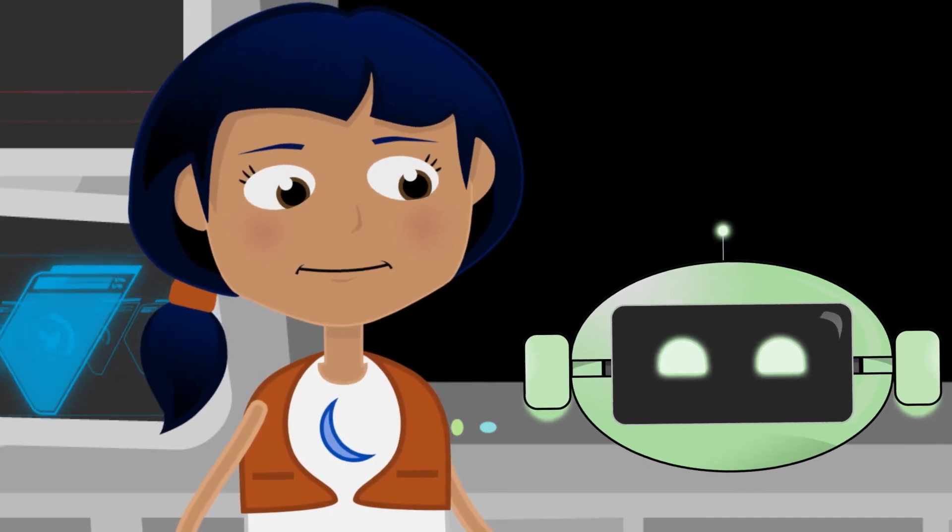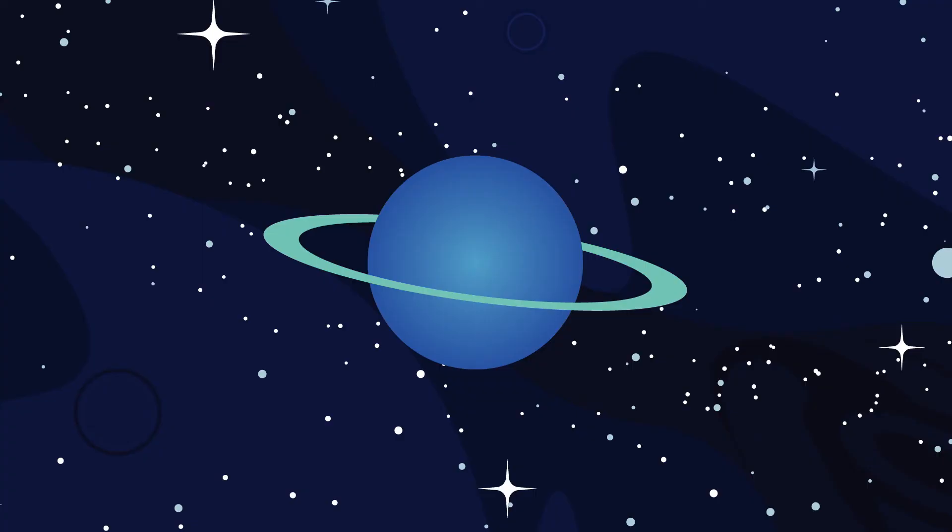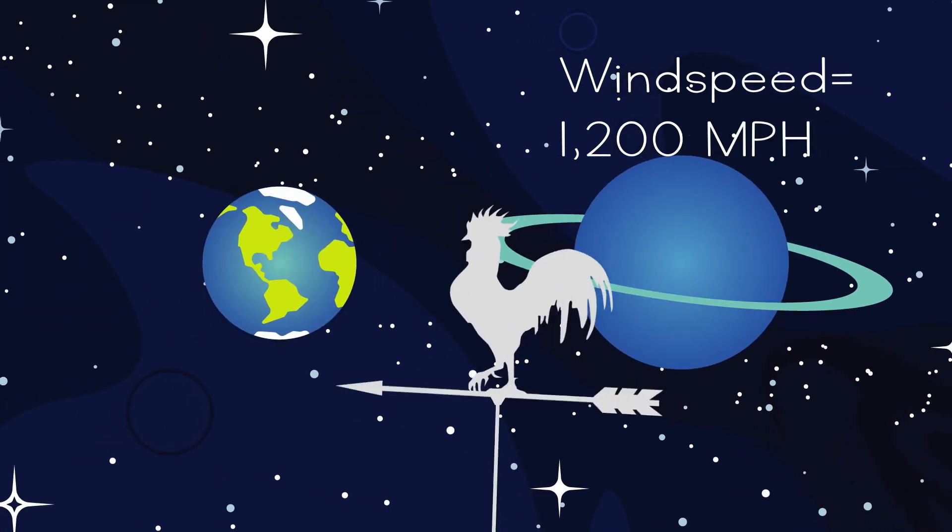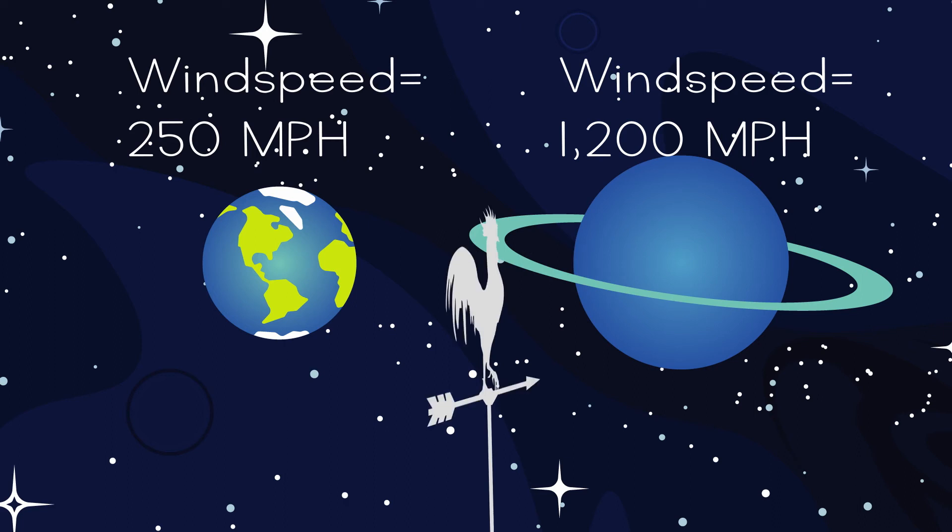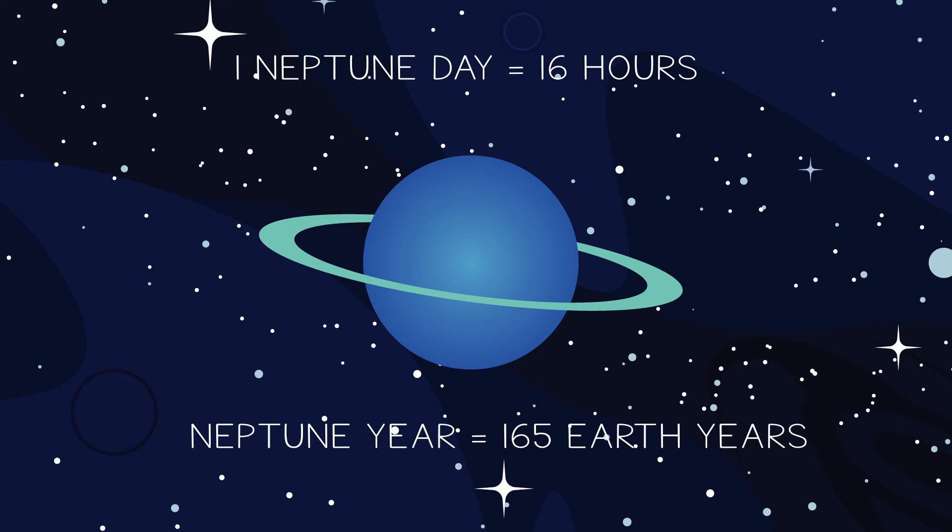That does not sound like a comfortable place to be. Definitely not. The winds can reach speeds of up to 1,200 miles per hour. Compare that to Earth, where the most powerful only hit 250 miles per hour. One day on Neptune is 16 hours long, while one year is 165 Earth years.